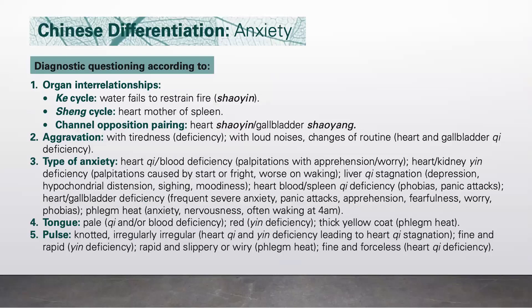Now let's look at the tongue. If the tongue is pale, it means qi and/or blood deficiency. If red, it means Yin deficiency. And if it has a thick yellow coating, it is due to phlegm heat.